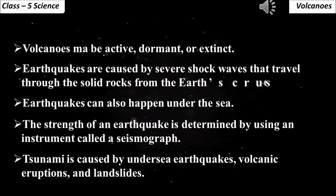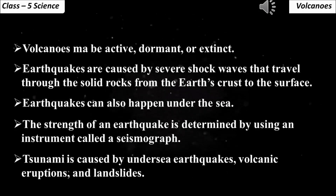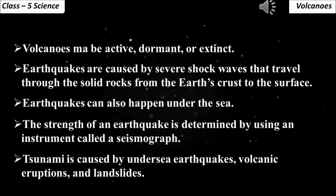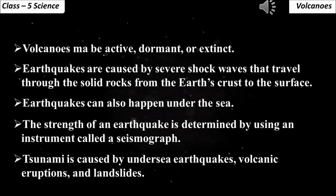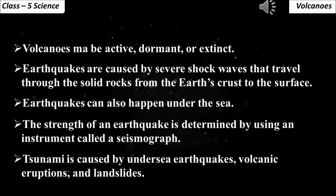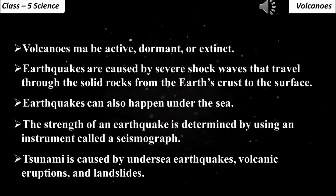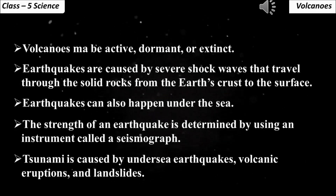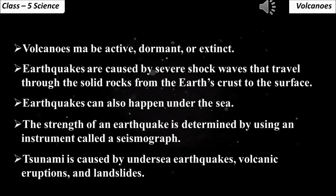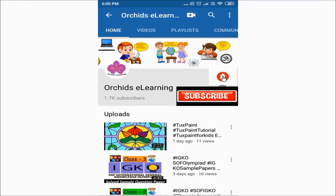Summary: Volcanoes may be active, dormant or extinct. Earthquakes are caused by severe shock waves that travel through the solid rocks from the earth's crust to the surface. Earthquakes can also happen under the sea. The strength of an earthquake is determined by using an instrument called a seismograph. Tsunamis are caused by undersea earthquakes, volcanic eruptions and landslides.